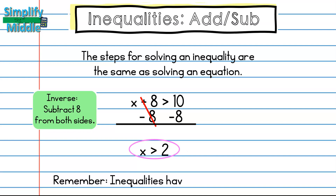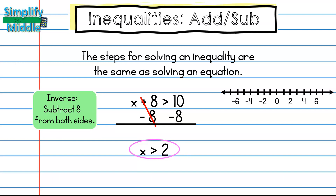Remember that an inequality has more than one solution, and 2 is not necessarily one of those solutions, so let's make a number line to see all of our solutions. On the number line, we decide whether to use an open or closed circle. Because this is not a 'greater than or equal to,' it will be an open circle at point 2, since 2 is not included. Then I pick a point on the right side and the left side of 2.